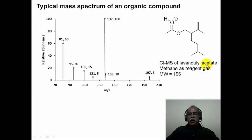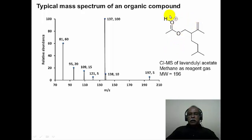In this particular case, this is lavender acetate, a fragrance agent isolated from lavender flower. This molecule has a molecular weight of 196, but the highest peak registered in the mass spectrum is at 197, because it corresponds to the protonated species of this molecule. So one can generate the charged species by adding a proton rather than knocking off an electron. Subsequently, the molecular ion undergoes fragmentation to produce all the other ions registered in the spectrum.